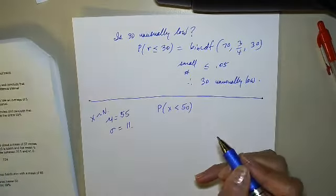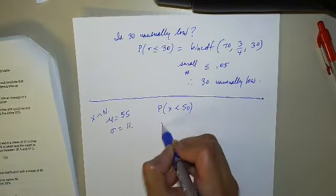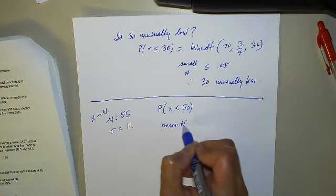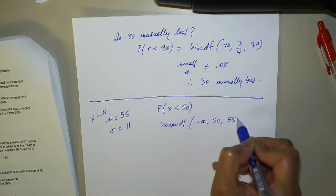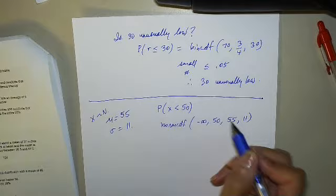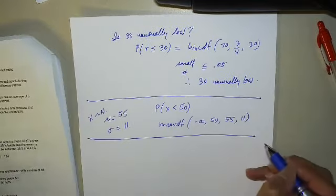Okay, next one: grades on a chemistry test follow a normal distribution with mean 55 and standard deviation 11. Approximate the percentage of students having scores below 50.